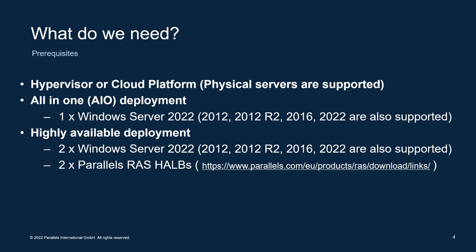In terms of prerequisites, we need a hypervisor, cloud platform, or physical servers. Today we're using Hyper-V, but Azure and AWS are also supported. For the all-in-one deployment we'll use one Windows Server 2022 — though 2012 through 2022 are all supported. For the second highly available deployment we'll add a second server and deploy two RAS HALBs, which are Linux appliances that load balance the gateways.